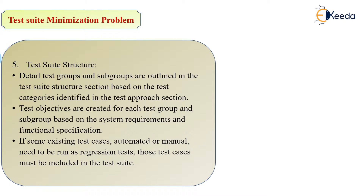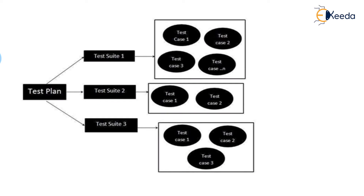The test suite structure evolves by first identifying detail test groups and subgroups, then defining test objectives, and identifying existing automated or manual test cases to be run. As shown in the diagram, a test plan can have multiple test suites, and each test suite can have multiple test cases — for example, 4, 5, or 6 test cases per suite — depending on how many test cases are associated with real scenarios.